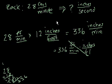So anyway, I don't want to confuse you too much with all of that unit cancellation stuff. The bottom line is, you just have to remember, if I'm going 28 feet per minute, I'm going to go 12 times that many inches per minute, right? Because they're 12 inches per foot. So I'm going 336 inches per minute.